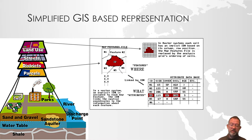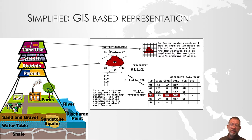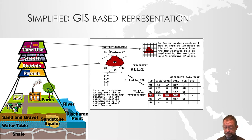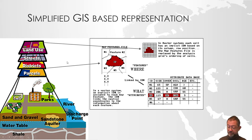We can't have some elements having an opening time and others having a number of books — we have to have the same attributes for all elements in the layer. We can of course have different attribute values, so each library has a different number of books, but we must have an attribute called 'number of books' for all elements in that layer. So there are considerations about when to split things into different layers and when to have them as a single layer with an attribute that distinguishes between them.